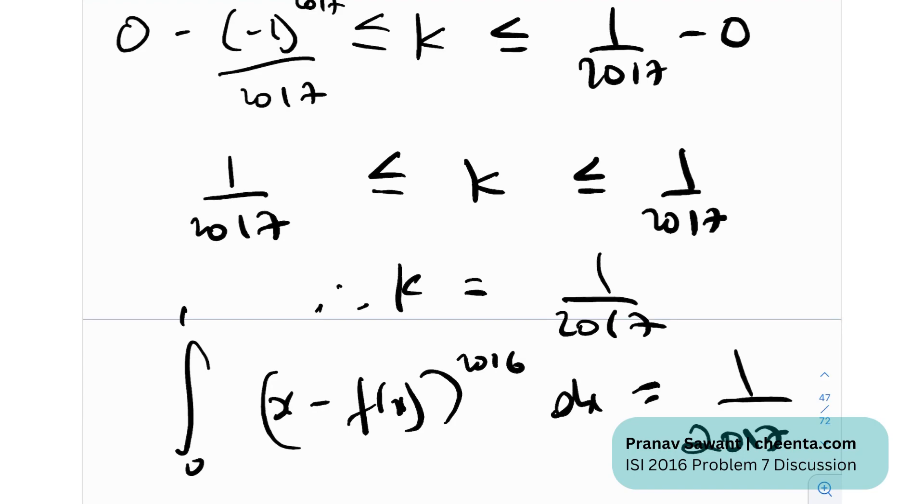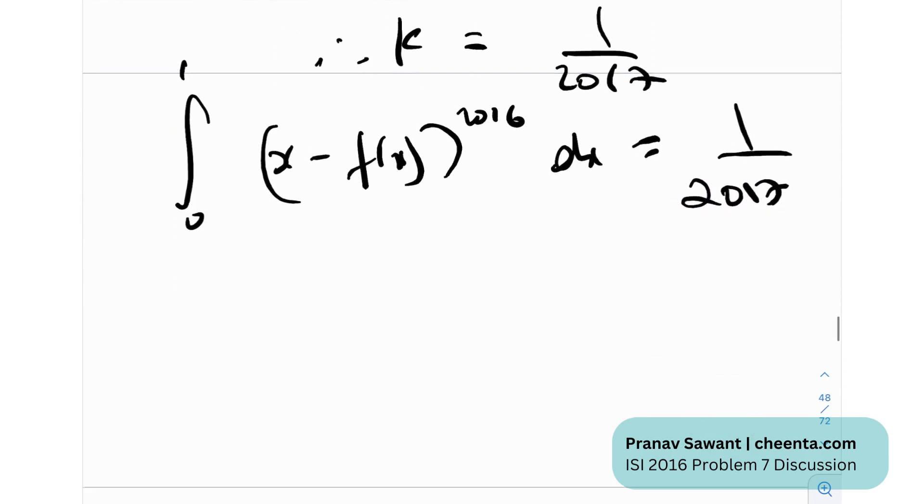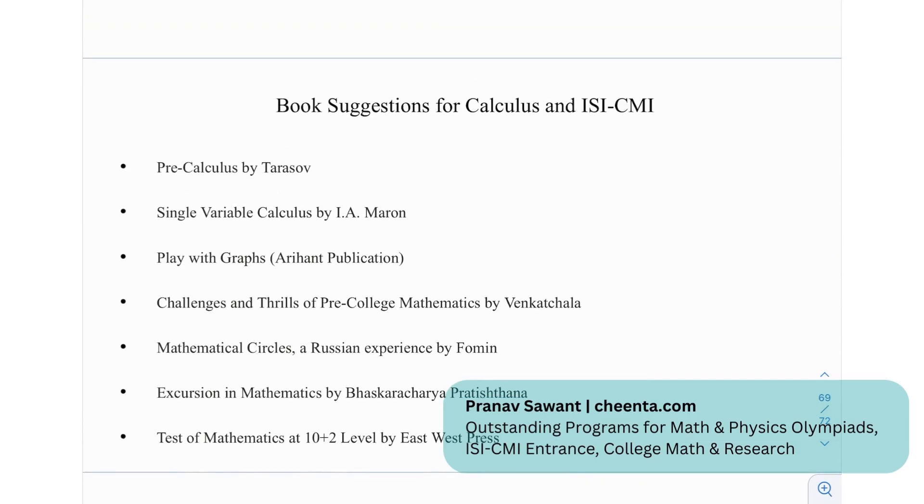That was quite an interesting method to solve this. There do exist other methods, substitution strategies, but I found this to be probably the simplest and the most elegant. After that, we have certain book suggestions for calculus and ISI-CMI: Pre-calculus by Tarasov, Single Variable Calculus by I.A. Maron, Playing with Graphs, Challenges and Thrills of Pre-College Mathematics, Mathematical Circles Russian Experience, Excursion in Mathematics, and A Test of Mathematics at the 10+2 level.